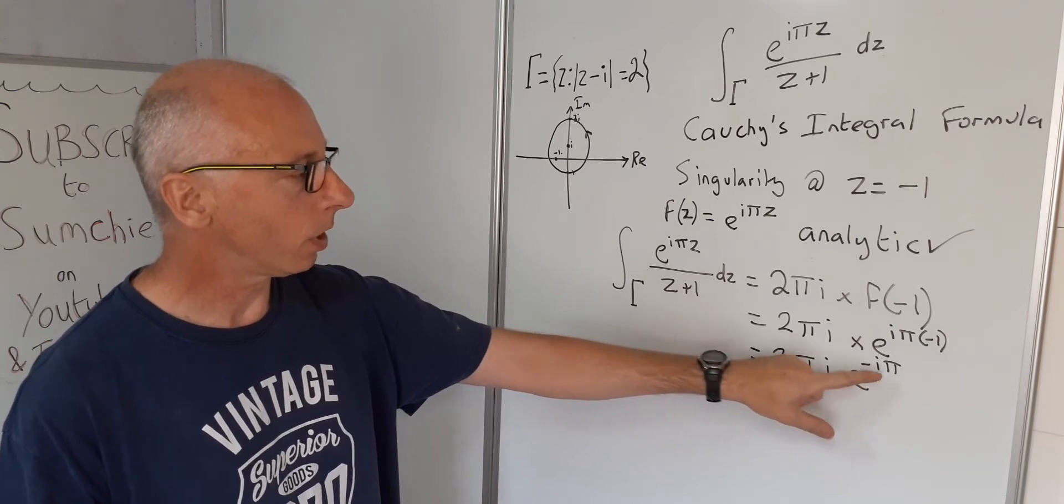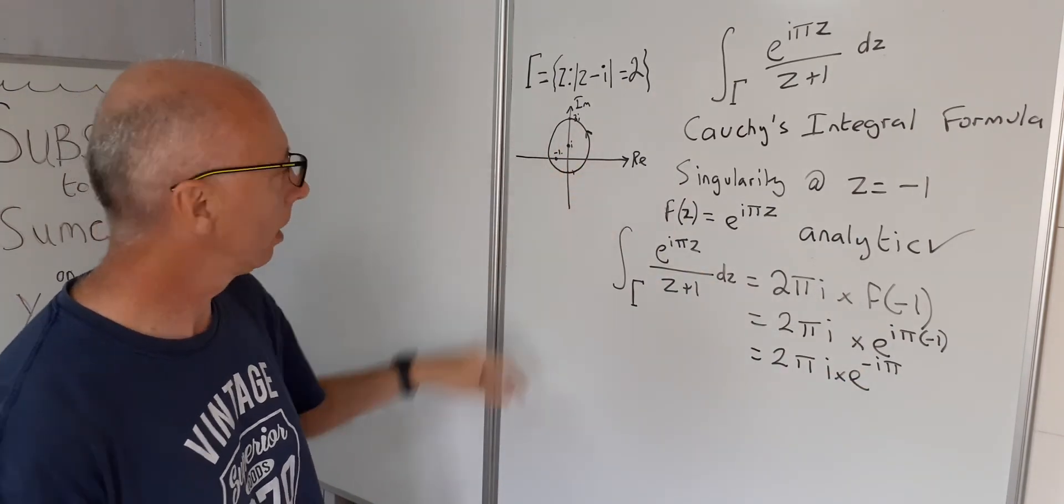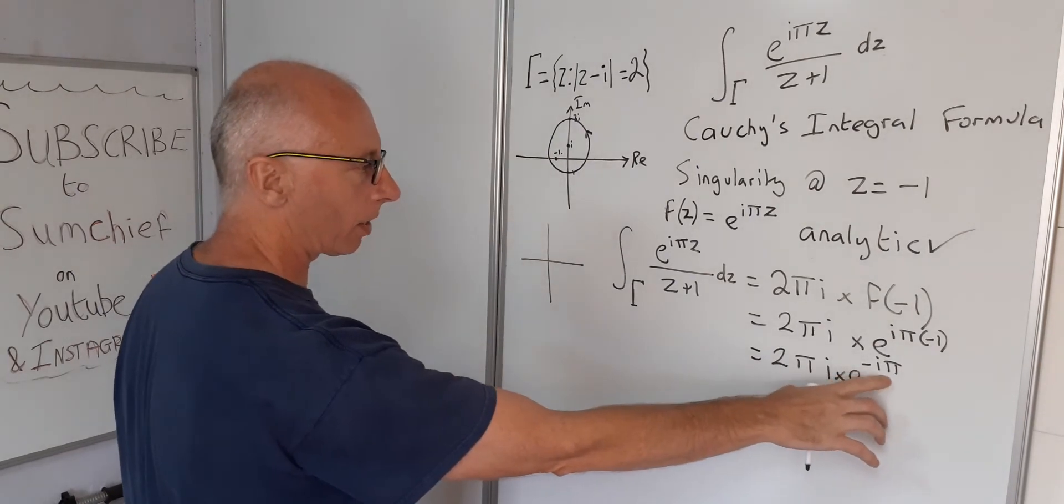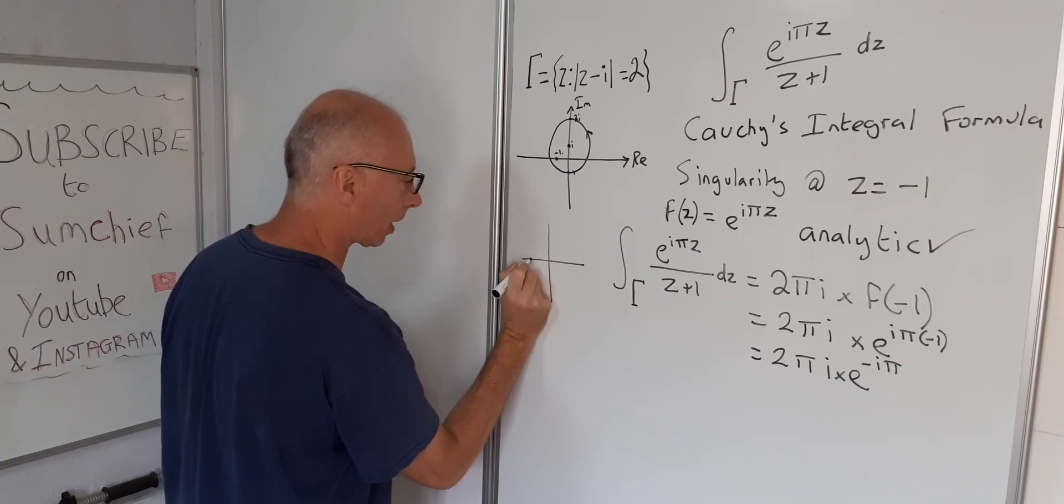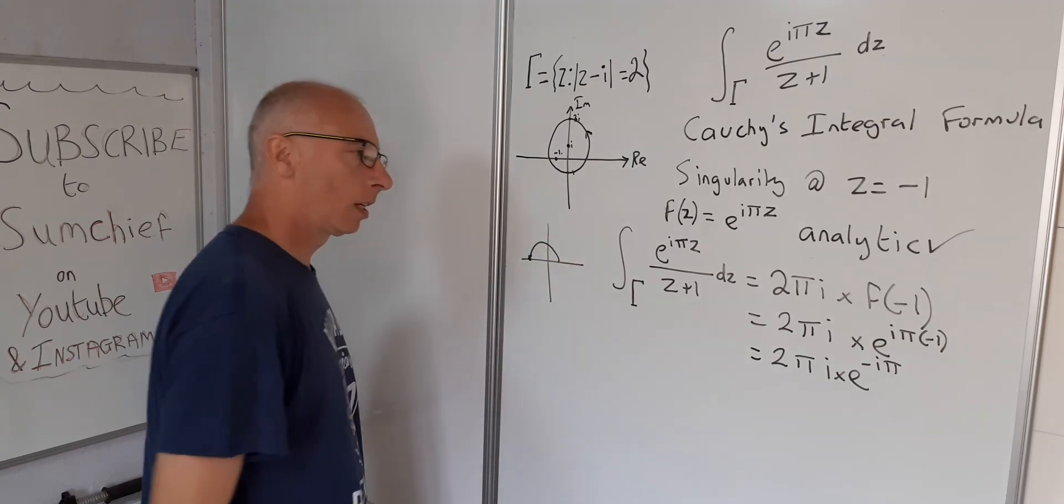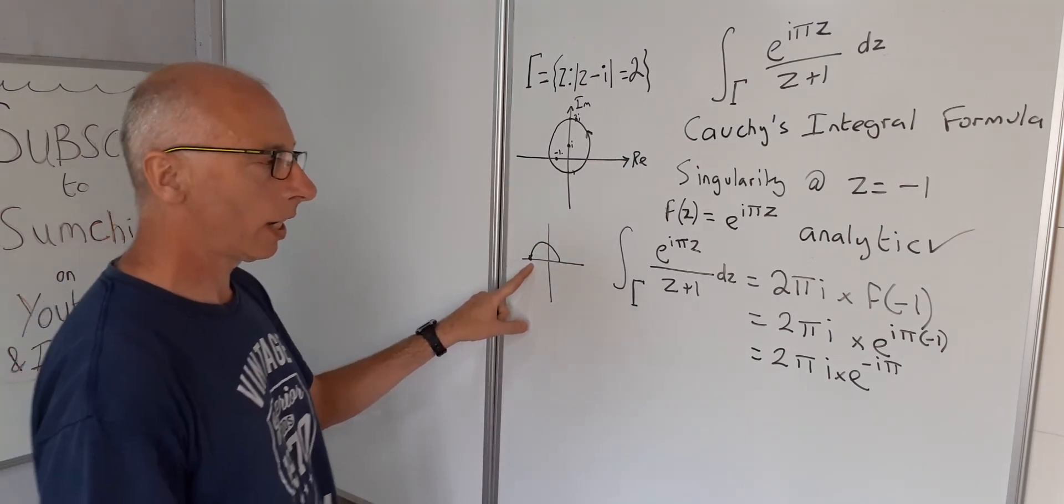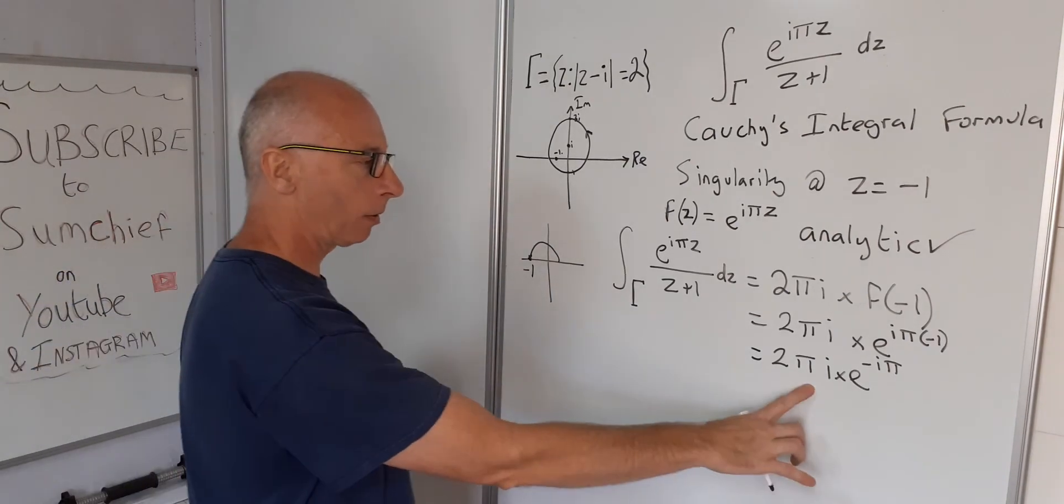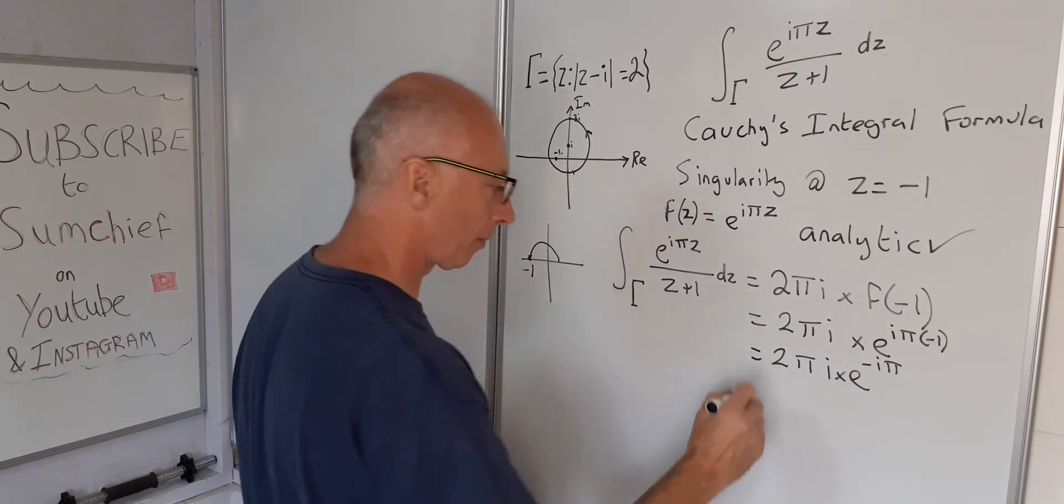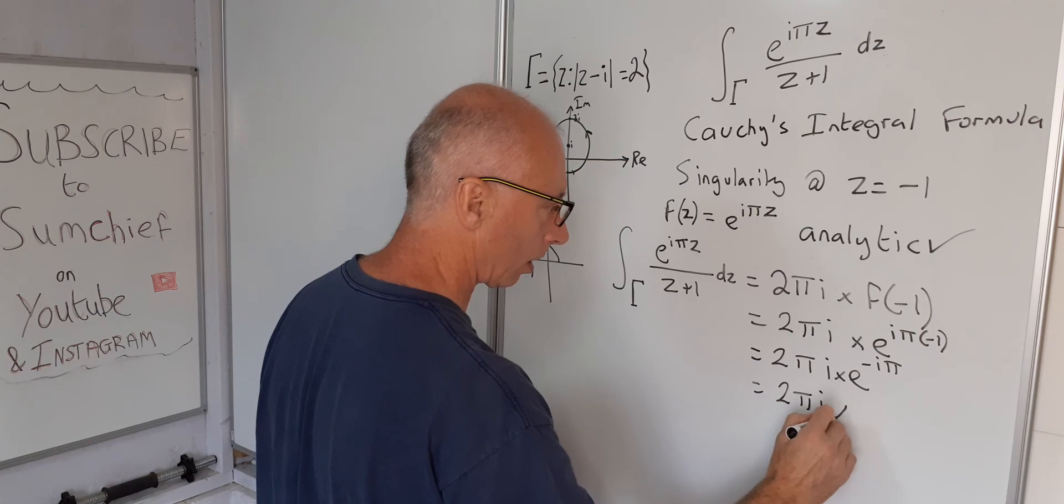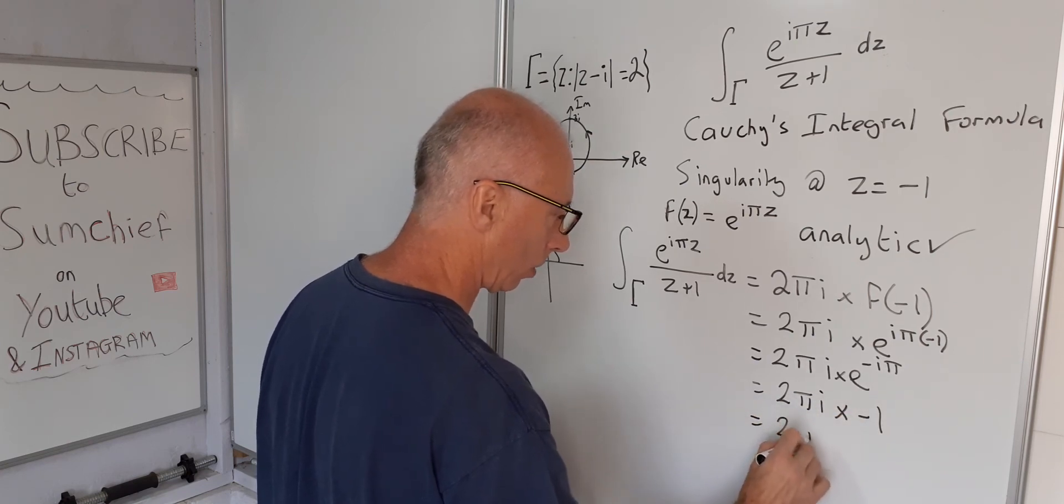Now if we look back to this circle here, let's just draw this down here instead. So the E to the minus I pi is basically E to the I of minus pi. So the minus pi will go around here, so that's going to take us to this point here, which is minus one. So all we've got to do now is multiply this by minus one.